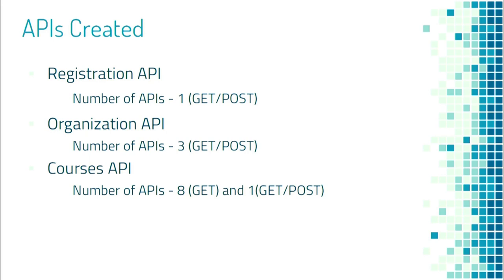One is the registration API, and organization has 3. You can get the data of registered users — after posting, the registered user is returned. If you want the data of a particular user by ID you can get it, or you can post the data of a new user, meaning you can register a user on the Open edX platform.